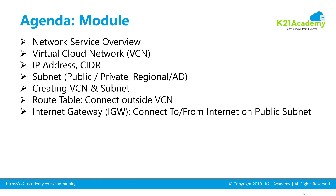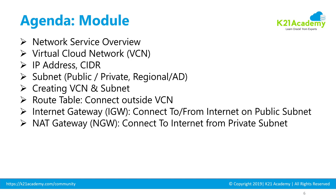Then we'll talk about different types of gateways, beginning with the internet gateway. The internet gateway is used to connect to or from the internet via the public subnet. Then you have NAT gateway, which is used by the private subnet to connect to the internet. Private subnets can't talk to the internet directly via the internet gateway — if a machine inside a private subnet wants internet connectivity, it uses the NAT gateway.